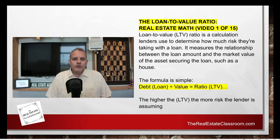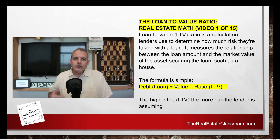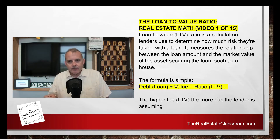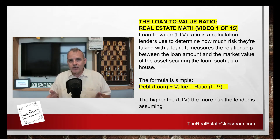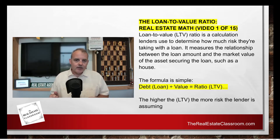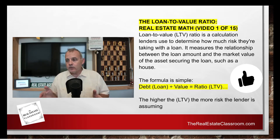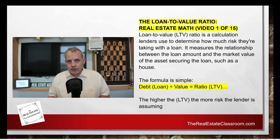A loan to value ratio is a calculation that lenders use to determine how much risk they are willing to take by providing you a loan or a mortgage. It basically measures the relationship between the loan amount and the value of the property or the asset. Typically we hear of loan to value ratios when we're purchasing a home, and a bank may have a minimum loan to value ratio.